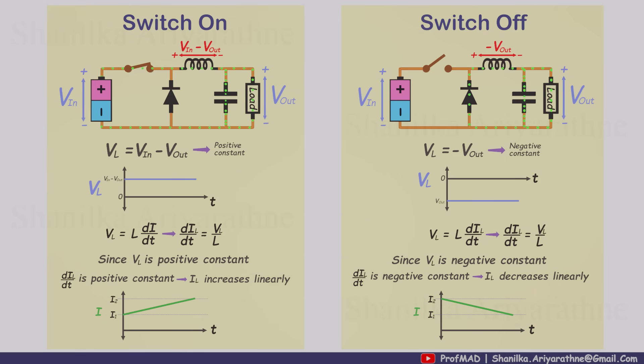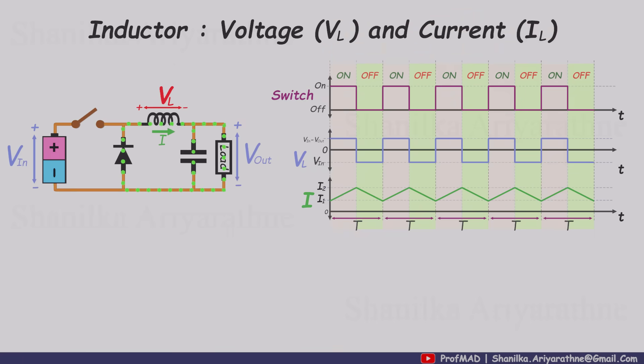Putting it all together, during switching, the voltage across the inductor looks like a simple square wave, V in minus V out when the switch is on, and minus V out when the switch is off. That square wave voltage across the inductor produces a triangular current waveform through it.